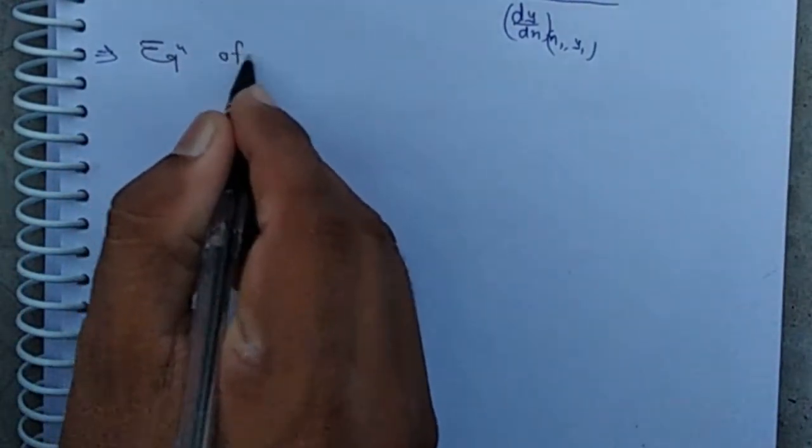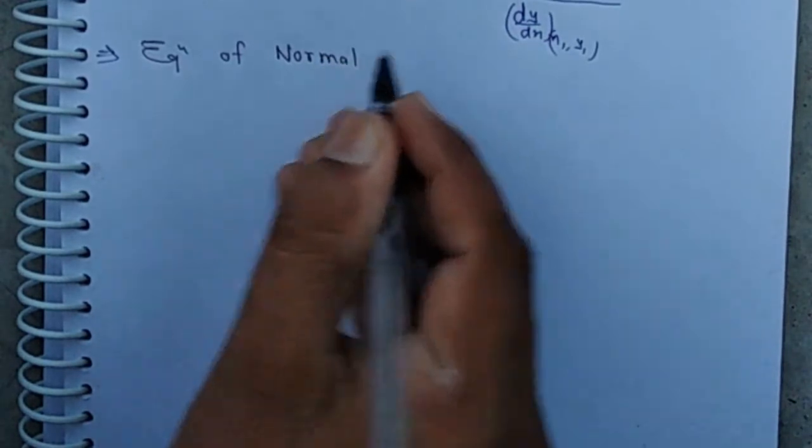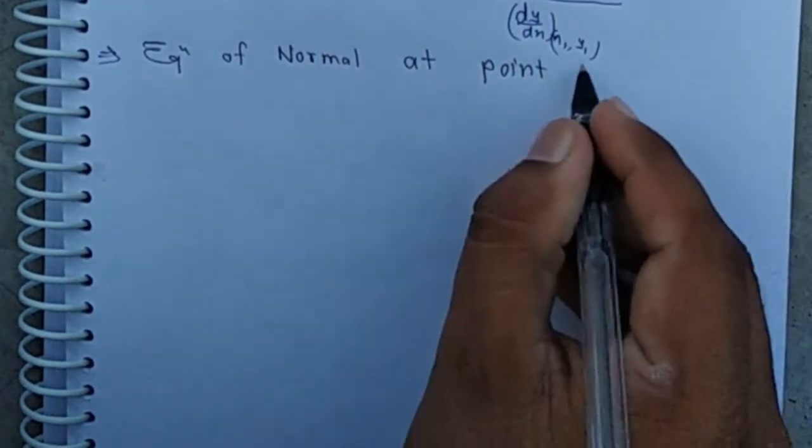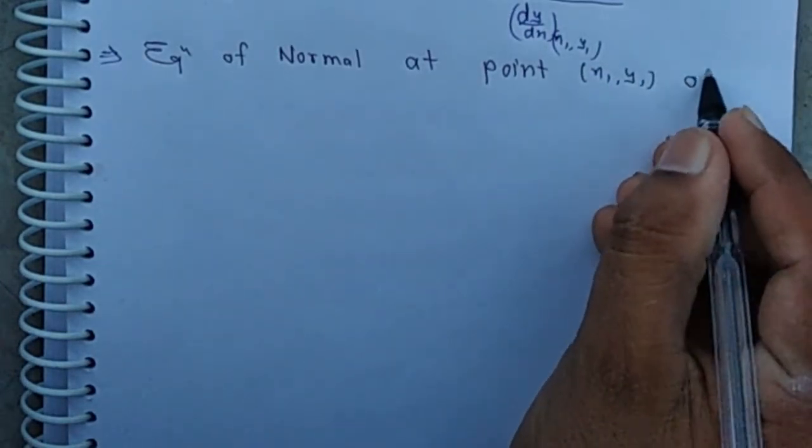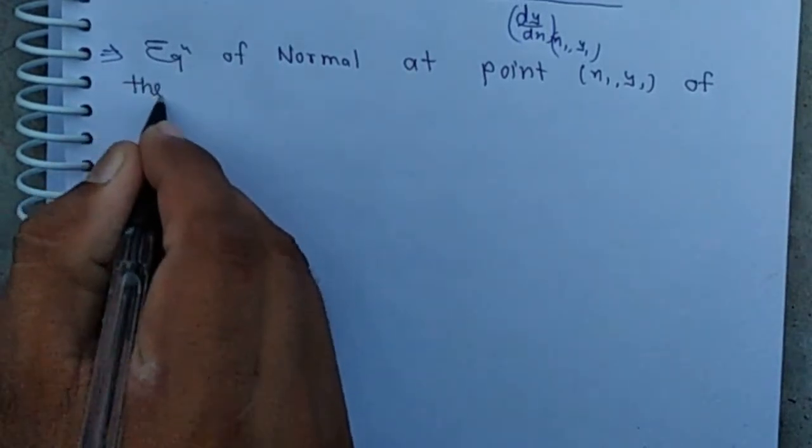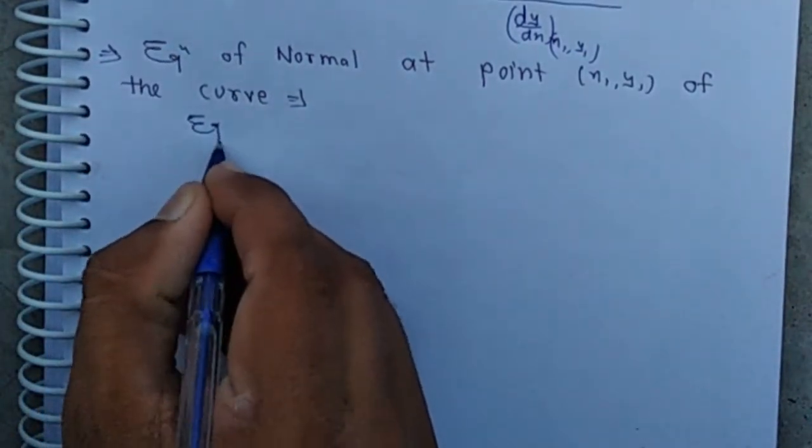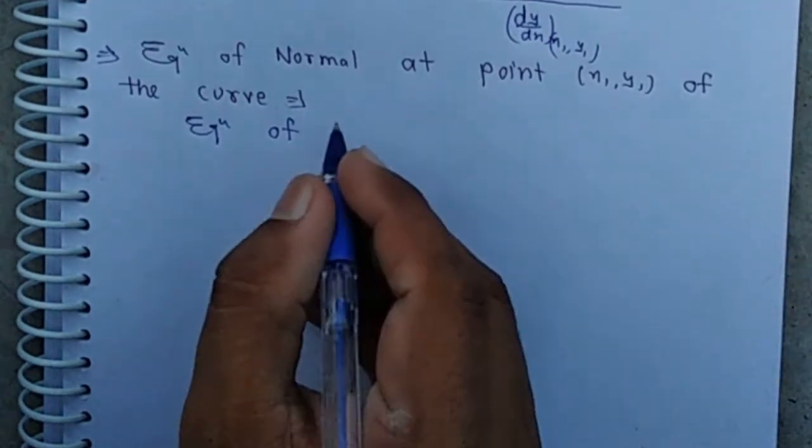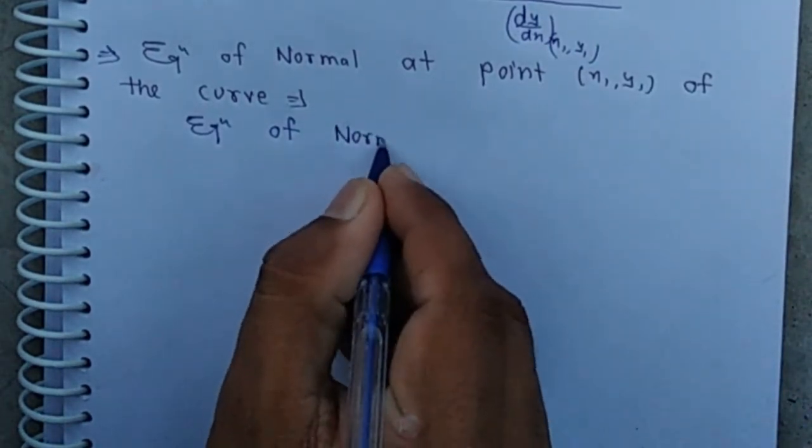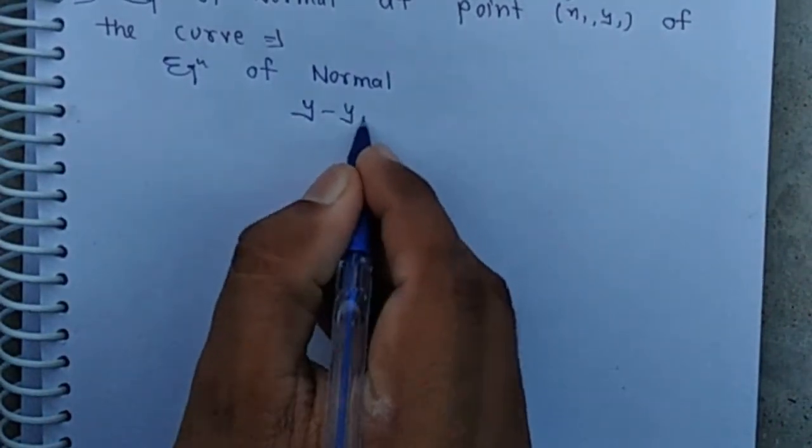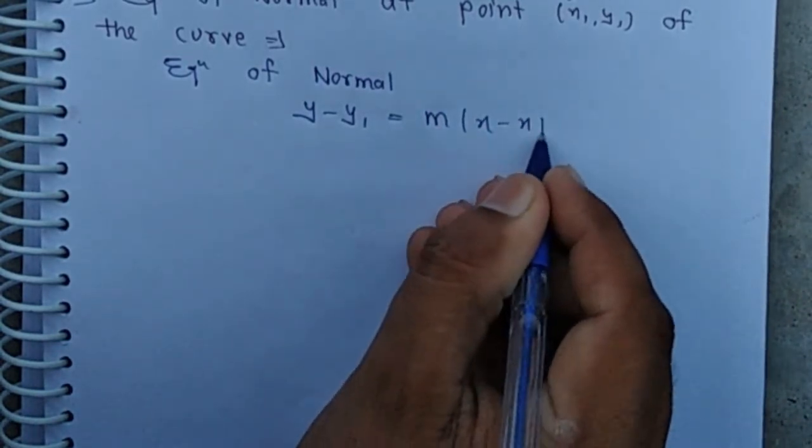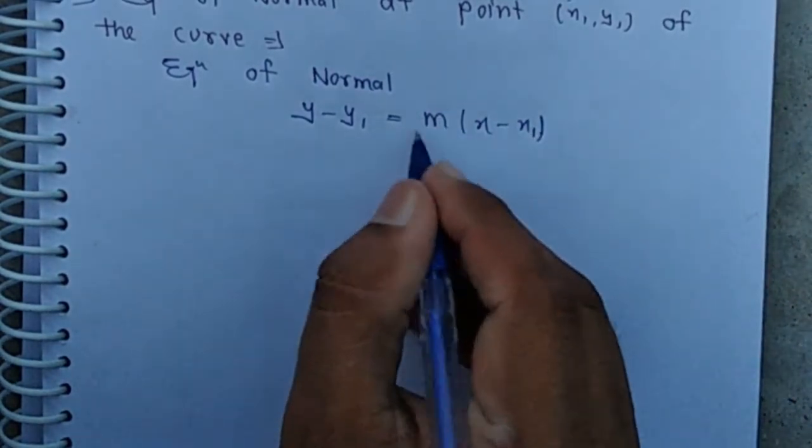Then equation of normal is given by the point-slope formula. Equation of line passing through point x1 comma y1 is y minus y1 equals m times x minus x1. Then equation of normal is y minus y1 equals m times x minus x1 where m is slope of normal.